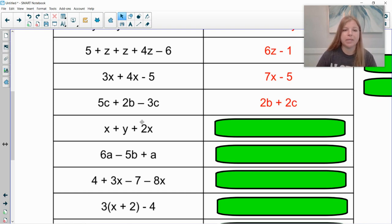x plus y plus 2x. This is really a 1x. 1x plus 2x is 3x. And then the y has nothing to combine with.